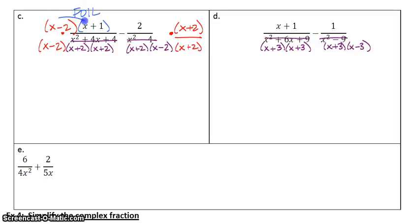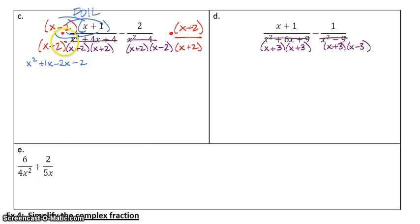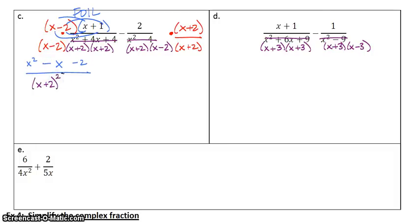Here is me FOILing it. Firsts, outers, inners — minus 2x — lasts, minus 2. Let's combine like terms before I write my denominator to save some space. 1x minus 2x: 1 minus 2 is negative 1, or negative x. The denominator is x plus 2 times x plus 2 times x minus 2. If you have something that's just repeated, you can write it x plus 2 squared because there are two of them — that saves you some time.